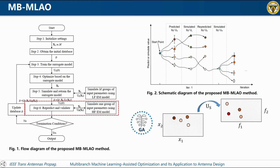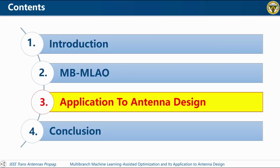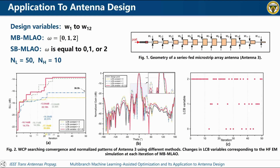Step six: repredict and validate — repredict the M group input parameters and select the optimal one for the high fidelity model to verify. If the termination condition is satisfied, stop the loop; otherwise, update the database and repeat step three. More details can be found in IEEE Transactions on Antennas and Propagation.